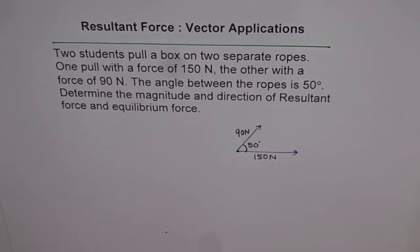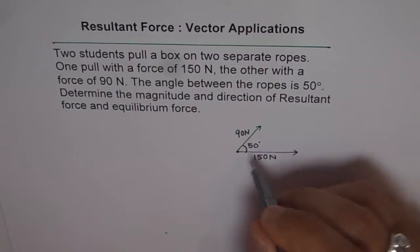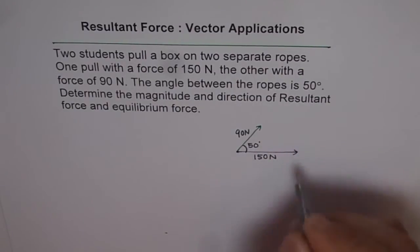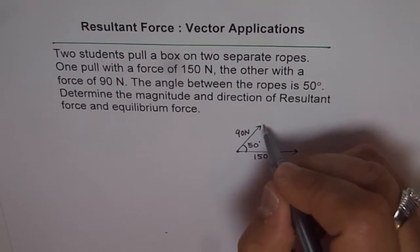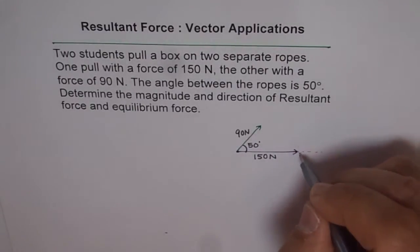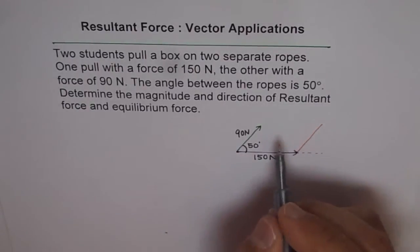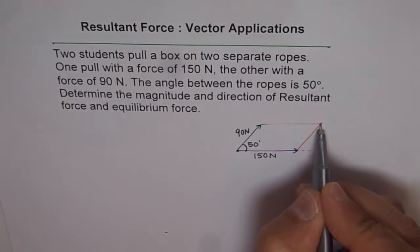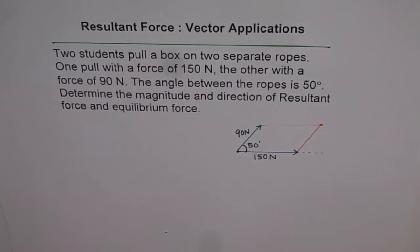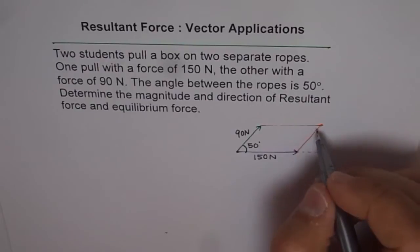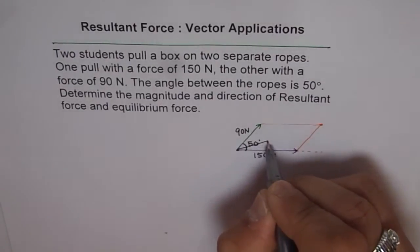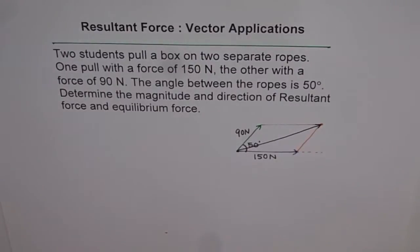Now what is the resultant? To get the resultant, we draw a parallelogram. Draw a line from here parallel to the 90 Newton force, and another parallel to the 150 Newton force — they meet at one point. That point gives us the resultant force from the origin of the two forces. Joining those two points gives us the resultant force.